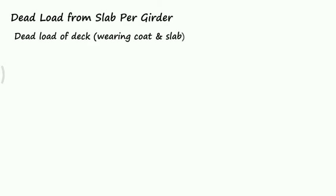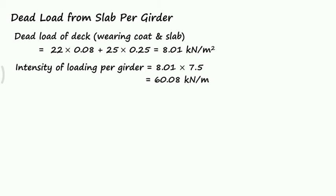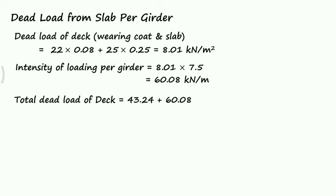For dead load from the slab per girder, the dead load of the deck includes the wearing coat and the slab. The unit weight of the wearing coat is 22 kN/m³ with a thickness of 80 mm, and the unit weight of the slab is 25 kN/m³ with a thickness of 0.25 m, giving 8.01 kN/m². The intensity of loading per girder is 8.01 multiplied by the width of the roadway, giving 60.08 kN/m. The total dead load of the deck is 43.24 + 60.08 = 103.32 kN/m.